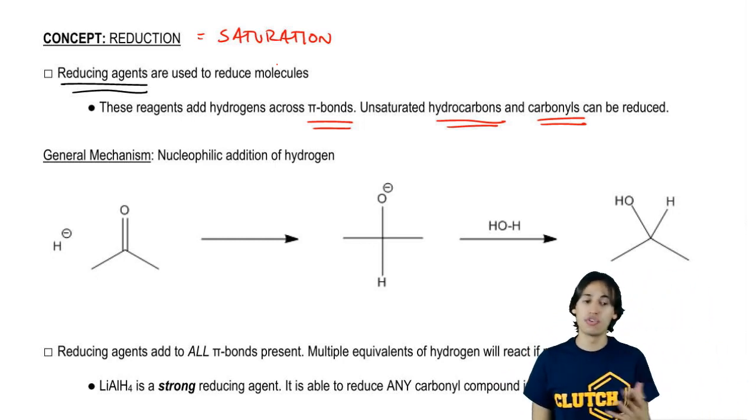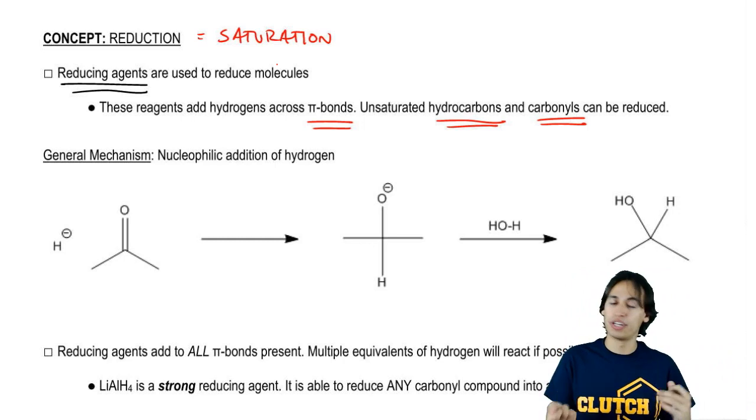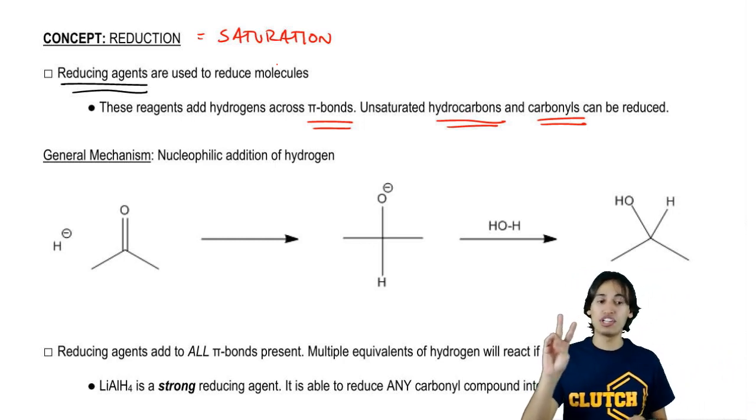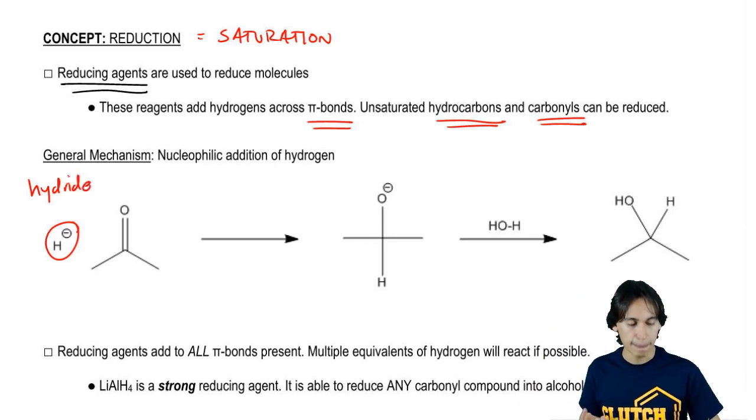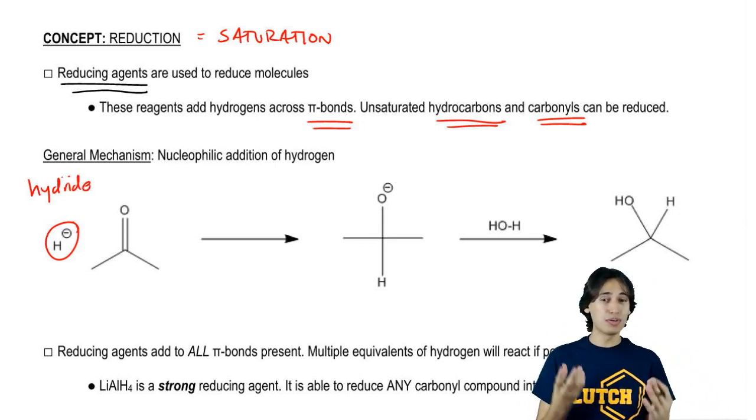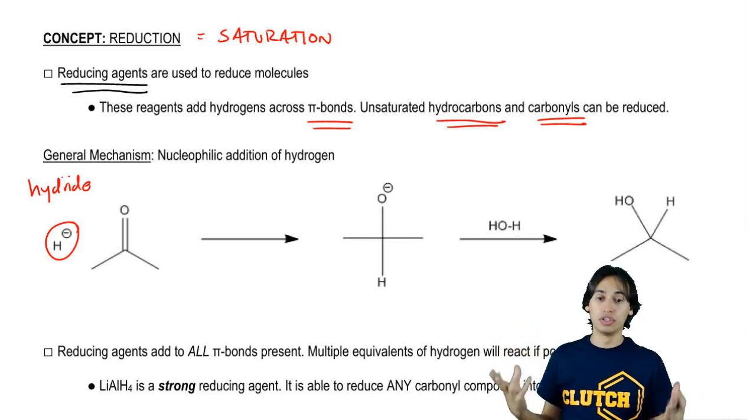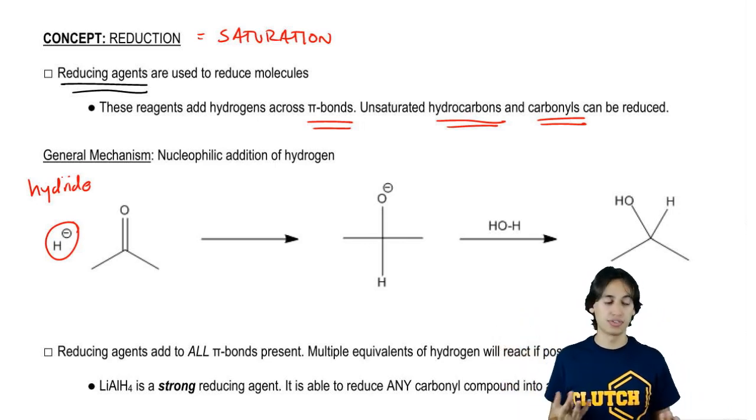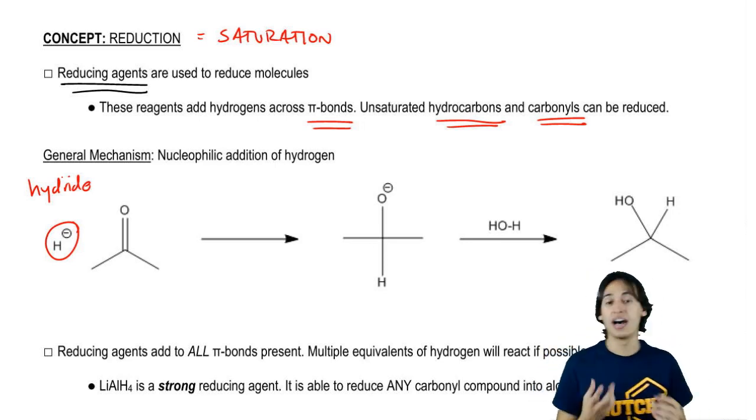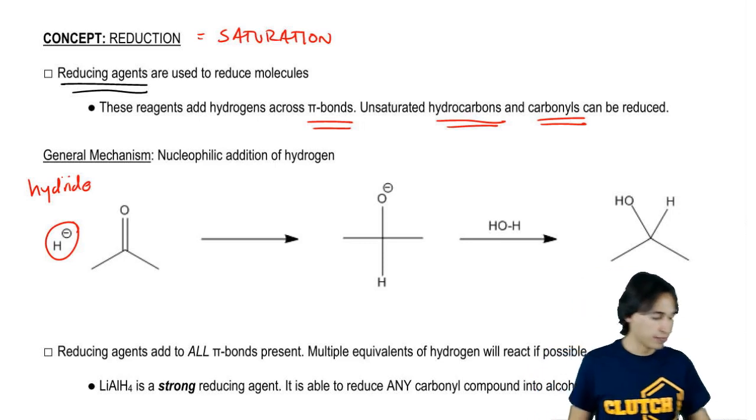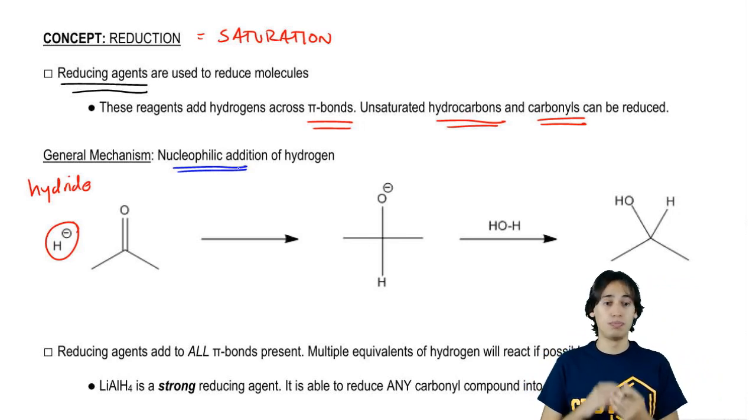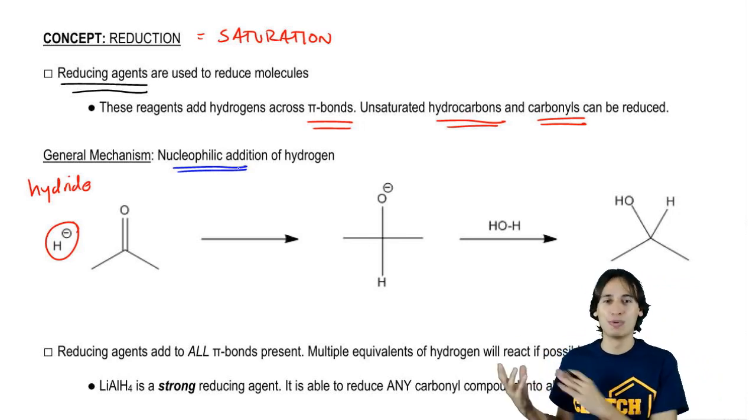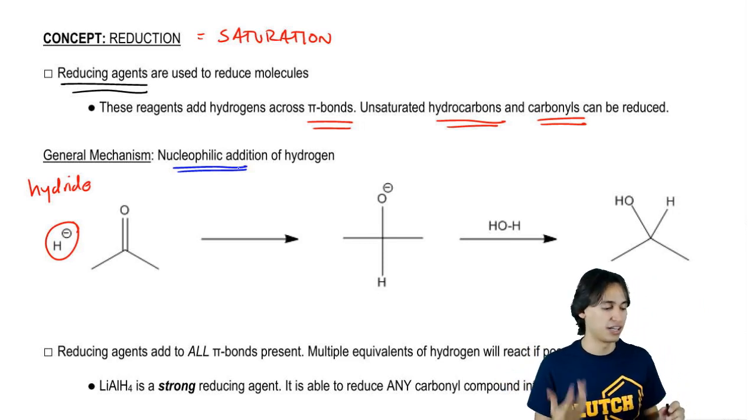I want to show you the general mechanism of what's going on. It's going to depend on the reagents, but basically both reagents we're going to learn about today are simply a source of H minus ion, which is a hydride ion. Regardless of what the carbonyl looks like, the hydride is always going to attack in the same way, which is a mechanism called nucleophilic addition. I don't need you to be a master of nucleophilic addition, but just humor me as I go through the first few steps.